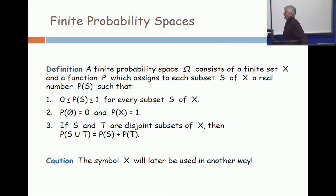So a finite probability space, capital Omega, consists of a finite set, a ground set, and a function p, it's called a probability measure, which assigns to each subset a real number, p of s, the probability of s, and it satisfies these properties.